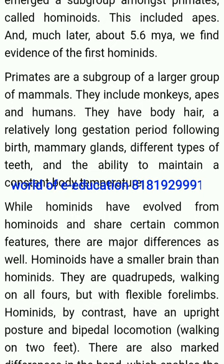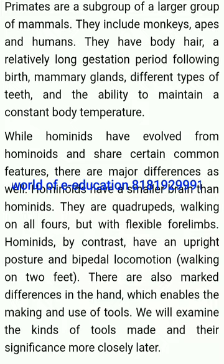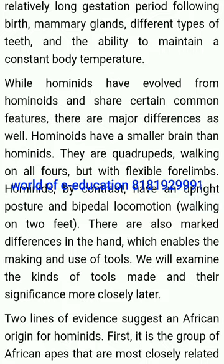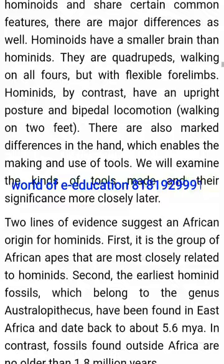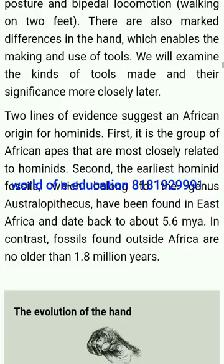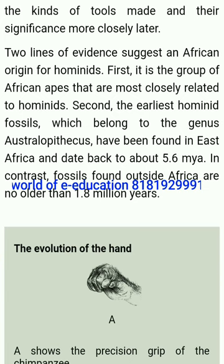Primates have body hair, a relatively long gestation period, mammary glands, different types of teeth, and the ability to maintain a constant body temperature. While hominids have evolved from hominoids and share certain common features, there are major differences as well. Hominoids have a smaller brain than hominids and are quadrupeds walking on all fours, but with flexible forelimbs. Hominids, by contrast, have an upright posture and bipedal locomotion — walking on two feet. There are also marked differences in the hand, which enables the making and use of tools.